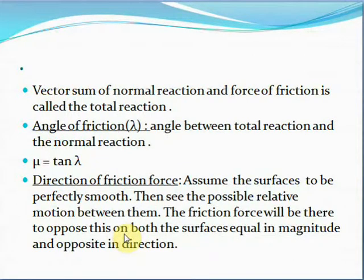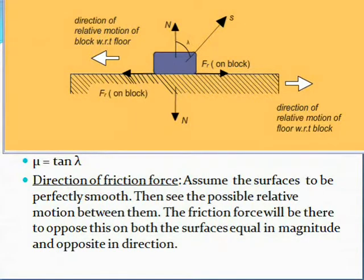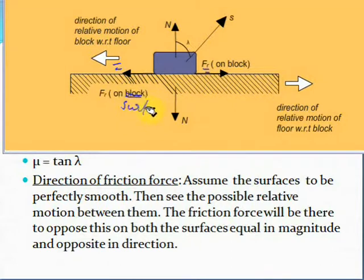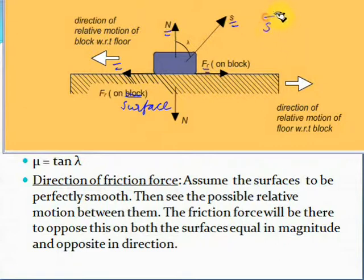Now let's see what is the total reaction force acting on a surface. The total reaction force acting on a surface is the vector sum of the normal reaction and the force of friction acting on the same surface. Suppose there is a block kept on a surface and the block is moving in the left-hand direction. The force of friction FR acts on the block in the right-hand direction, and the reaction friction FR on the surface acts in the left-hand direction. Here N is the normal reaction on the block, so the total reaction force S acting on the block equals the vector sum of N and FR.